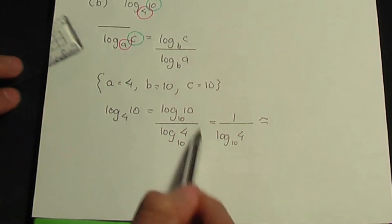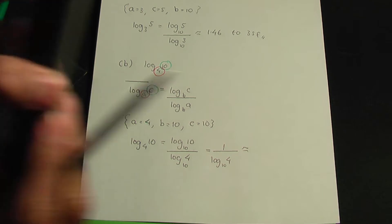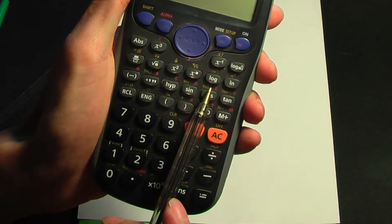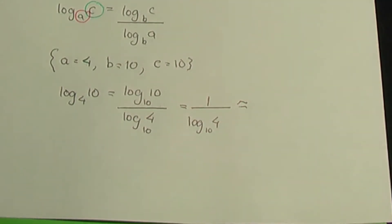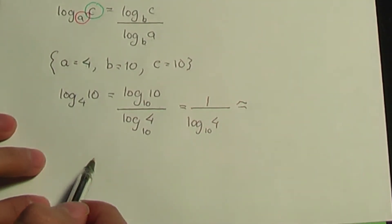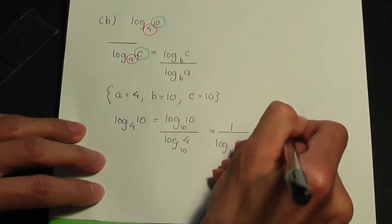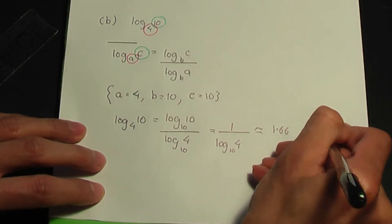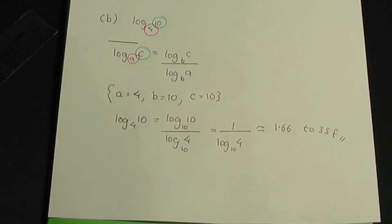We can calculate this using our calculator. Remember, you can use the LOG button on your calculator — LOG means log to the base of 10. If you plug this into your calculator, you should get an approximate answer of 1.66, correct to 3 significant figures. That should be the solution to part b.